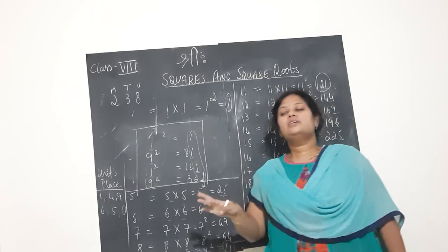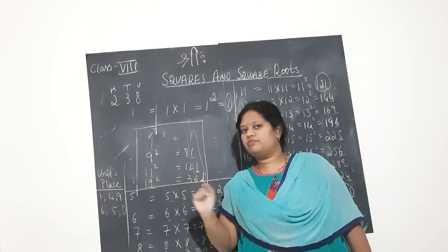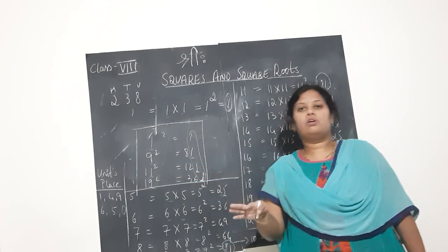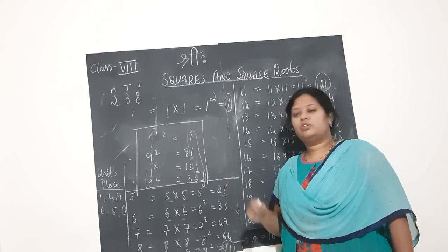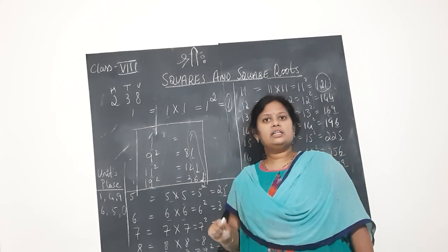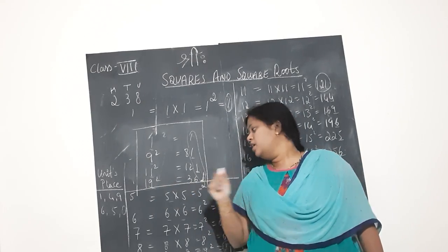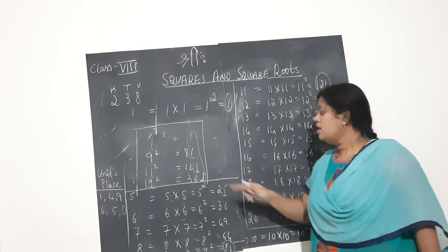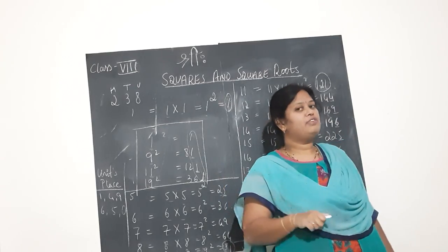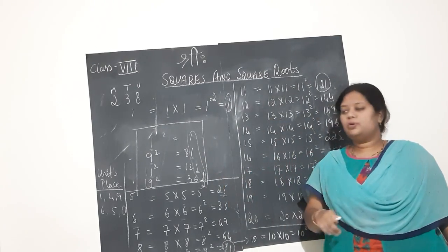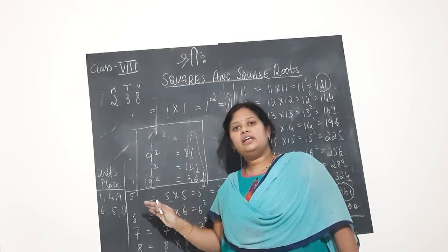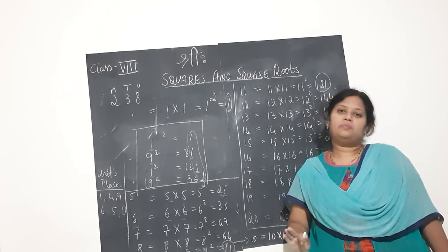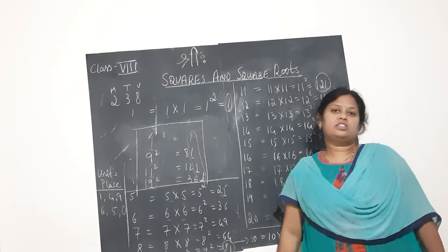This is one concept you should know. In a test, suppose I ask you 19 squared — you suddenly can't recall. You might write 360, which is wrong. But if you know this concept: 19 has 9 in the units place, so the square must end with 1. How could you have written 360? You should immediately verify. If a number has 1 or 9 in its units place, its perfect square will always have 1 in the units place — its last digit will be 1.